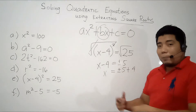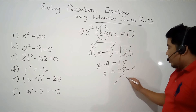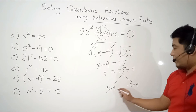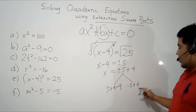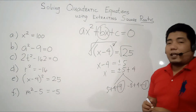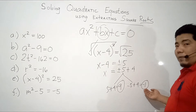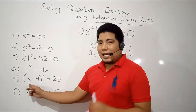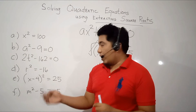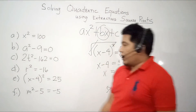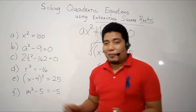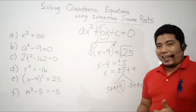We need to simplify further by separating the two cases: positive 5 + 4 = 9 and negative 5 + 4 = -1. Therefore, our two answers are x = 9 and x = -1. Let's check: if x = 9, then 9 - 4 = 5, and 5² = 25. Correct. If x = -1, then -1 - 4 = -5, and (-5)² = positive 25. Therefore, our answers of 9 and -1 are correct.